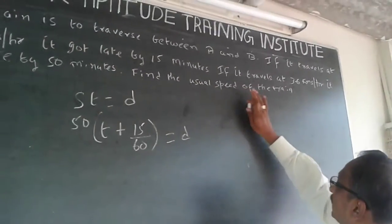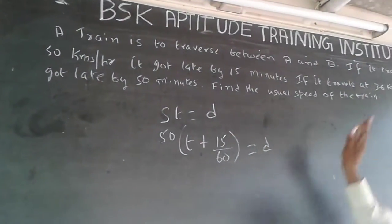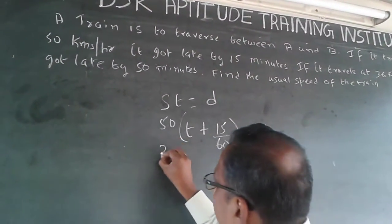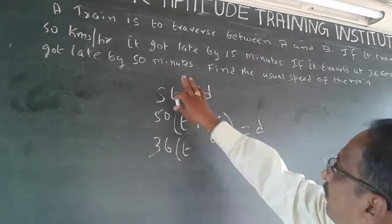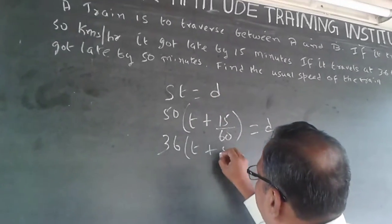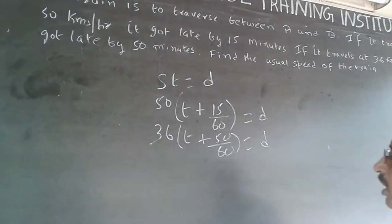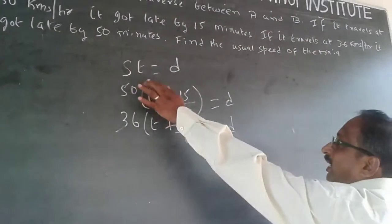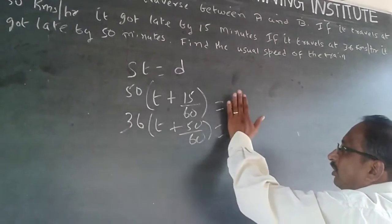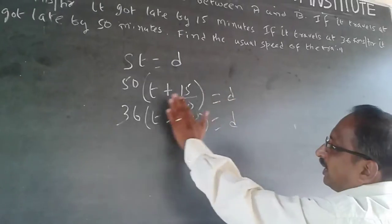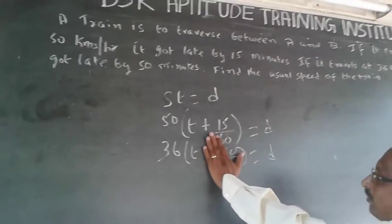The next part says: if it travels at 36 kilometers per hour, the speed becomes 36. It is late by 50 minutes, so the time is T plus 50 by 60, which is 5 by 6. This gives 36 into (T + 5/6) = D. Since D is always constant, if the right-hand sides are equal, the left-hand sides must be equal too.